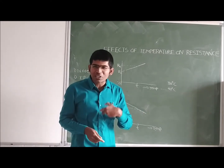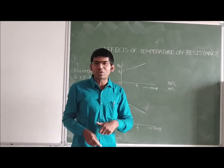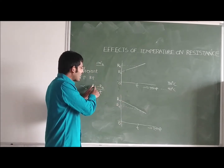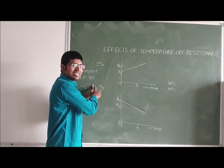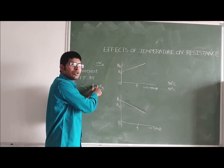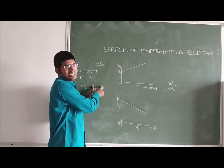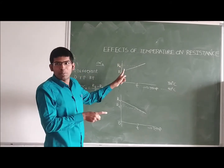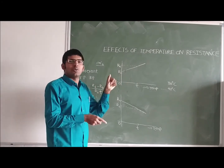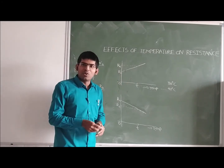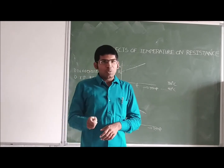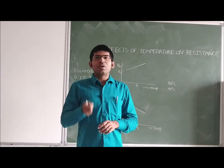Why do we call it a positive temperature coefficient? Because RT, the final resistance, is larger compared to the initial resistance R naught. So RT minus R naught is a positive value, which means alpha naught is a positive value. Therefore, metals exhibit a positive temperature coefficient.